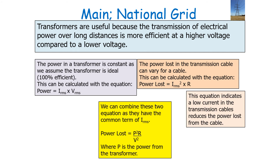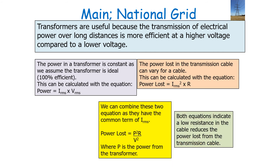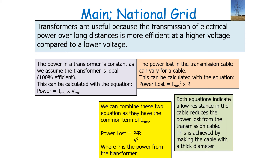The equation P = I²R indicates that a low current in the transmission cables reduces the power loss from the cable. The second equation, power lost = P²R/V², indicates that a high voltage in the transmission cables reduces the power lost from the cable. Both equations also indicate that a low resistance in the cable reduces the power loss, which we can achieve by either making the cable with a thicker diameter or using a material of lower resistivity.